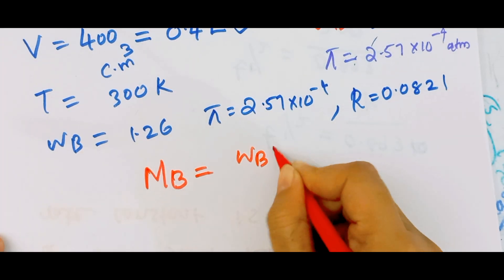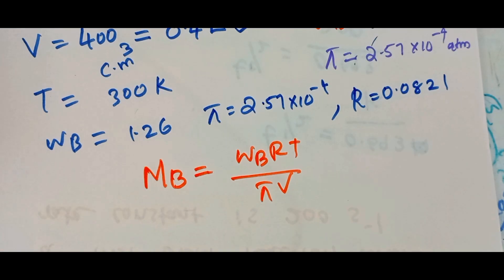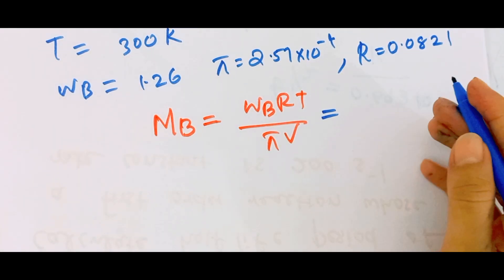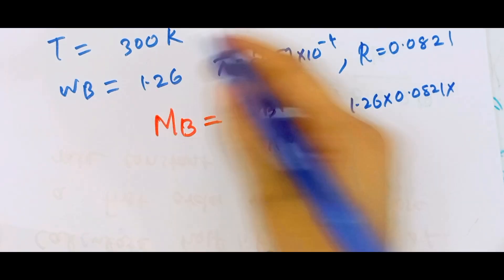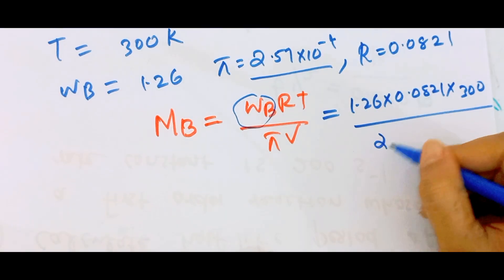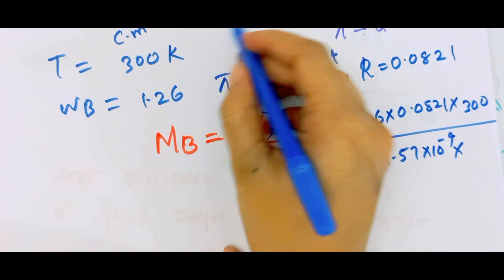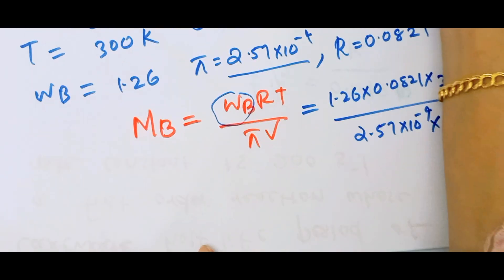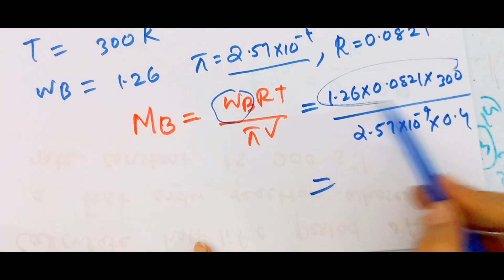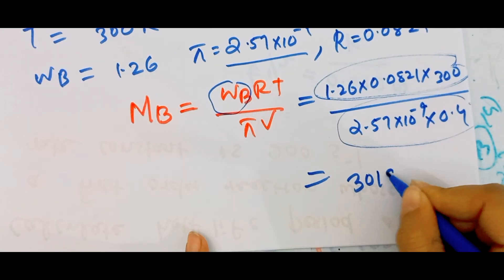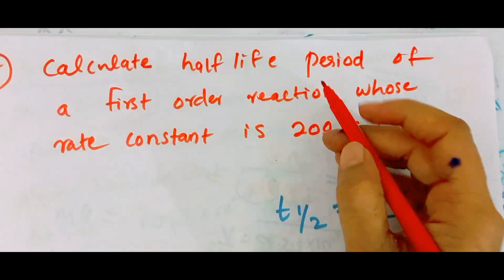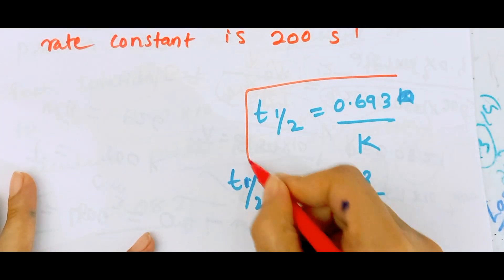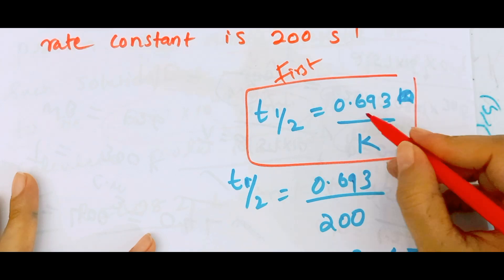Using the formula Mb = WbRT / (πV): Wb = 1.26 g, R = 0.0821, T = 300 K, π = 2.57 × 10⁻⁴ atm, V = 0.4 L. Calculating this gives Mb approximately equal to a large value (on the order of 10⁴ g/mol).